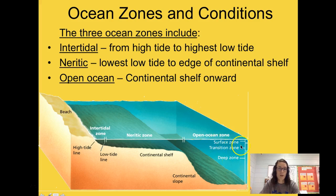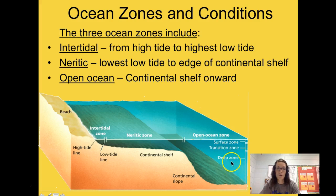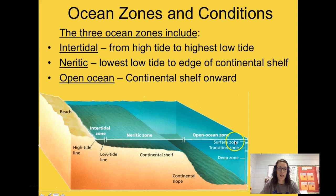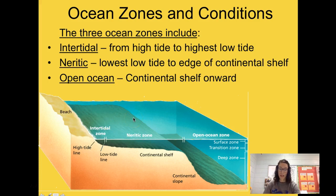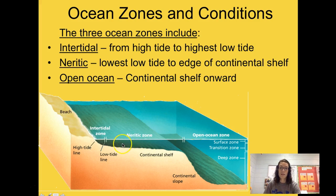The open ocean zone is broken up into three zones: the surface zone, the transition zone, and the deep zone. At the surface we have a lot of light coming in; deeper we have some light but not much; and in the deep zone there's hardly any light at all. Using your stems: the surface zone is a photic zone — 'photo' meaning light — and the deep zone is aphotic, meaning no light.